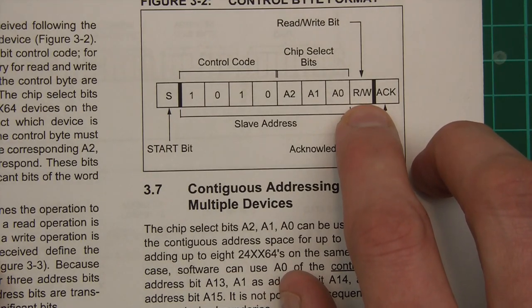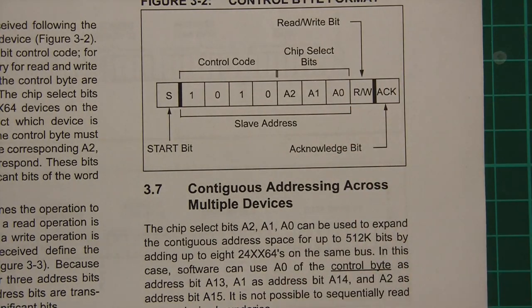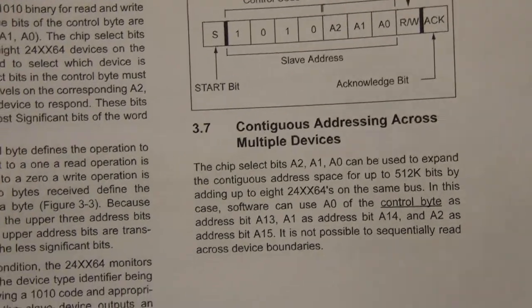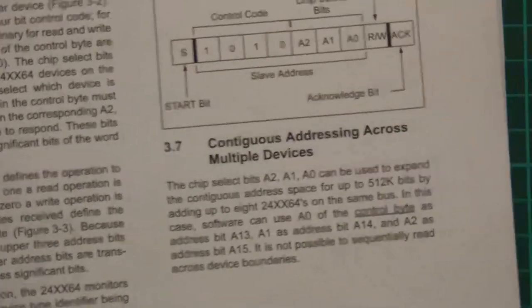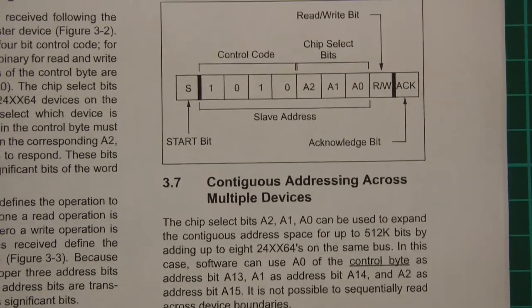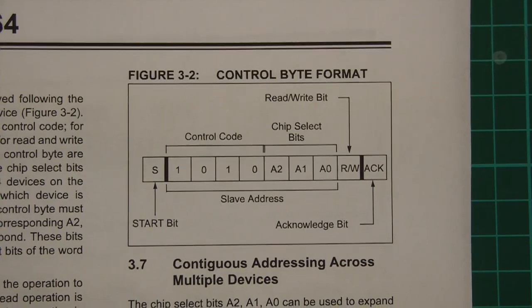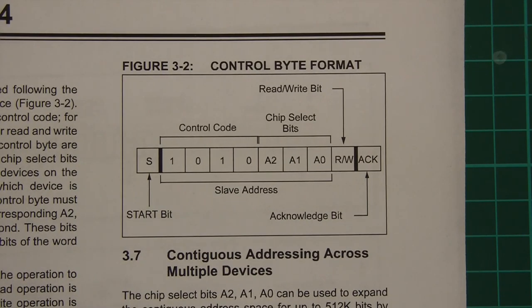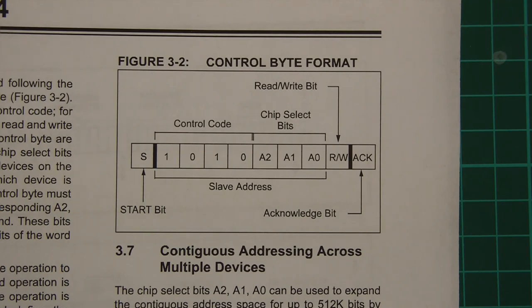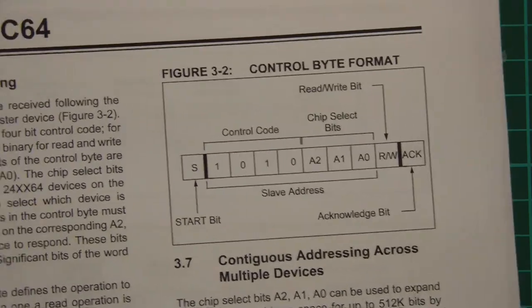And yeah, let's find out a bit more about that. But it does say here somewhere, the last bit controls the operation to be performed. When set to a one, a read operation is selected, and when set to zero, a write operation is selected. So yeah, if you want to read, you'd set that to a one. If you want to write, you'd set it to zero. Fairly straightforward, and of course you'd do that in the code.